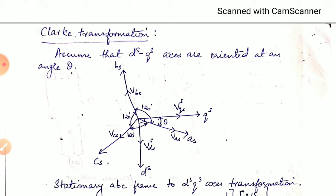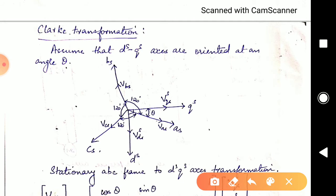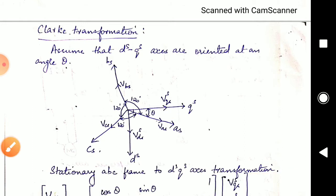A three-phase stationary system is converted into a two-phase stationary system. Our three-phase stationary system we are taking as AS, BS, and CS, and our two-phase stationary system we are taking as QS and DS — that is our direct axis and quadrature axis.